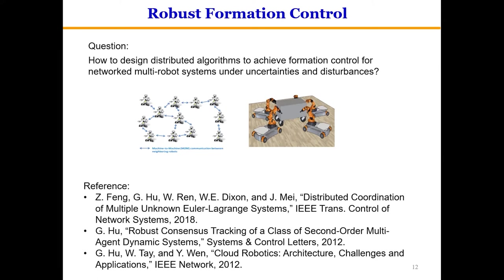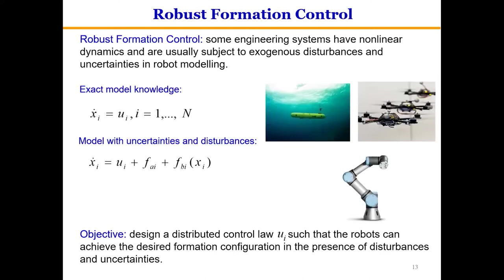We aim to address this question: how to design distributed algorithms to achieve formation control for networked multi-robot systems under uncertainties and disturbances. Consider a first-order agent model where xi is the state and ui is the input. One formulation adds two terms fpi and fbi in the agent dynamics. The objective of this robust formation control problem is to design a distributed control law ui such that the robots achieve the desired formation configuration in the presence of disturbances and uncertainties.